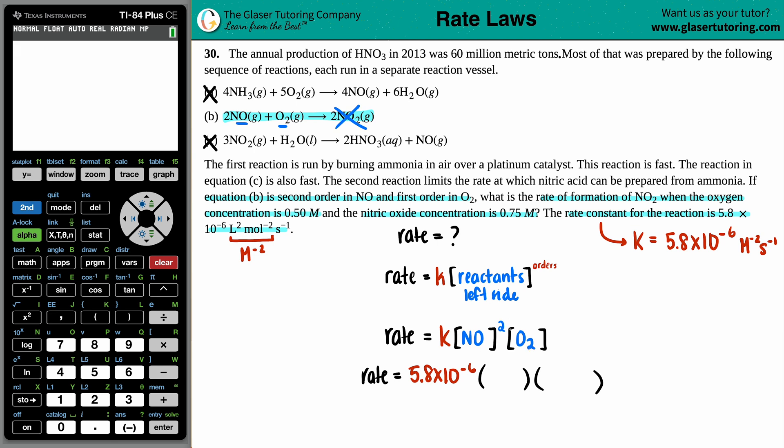NO, they told us that, let's see, they said that the nitric oxide concentration, that's the NO. So the nitric oxide was the 0.75 molarity. And they said that the oxygen concentration, that's the O2, that's 0.50 molarity. So we have 0.75 and 0.5 for NO and O2. And just be careful, the NO has to be squared because they said that the NO was second order.